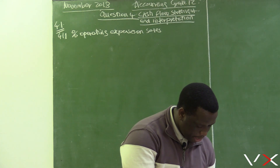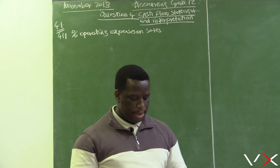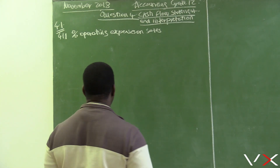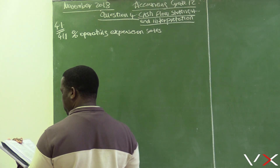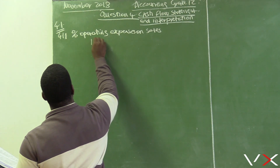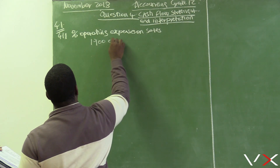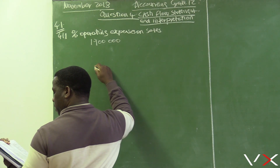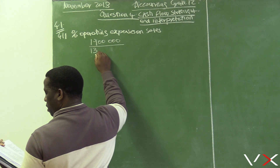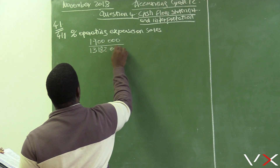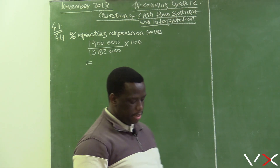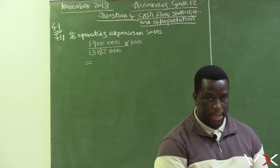From page 14, operating expenses for 2018 is R1,900,000 and sales is R13,182,000. So the calculation is: 1,900,000 divided by 13,182,000, multiplied by 100.